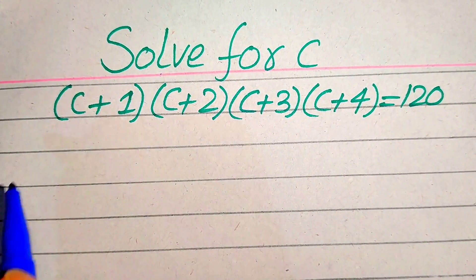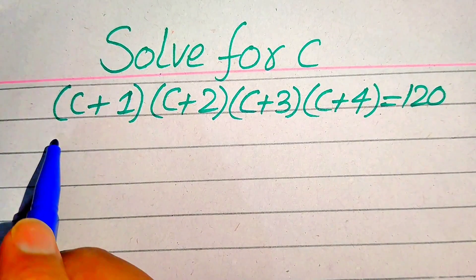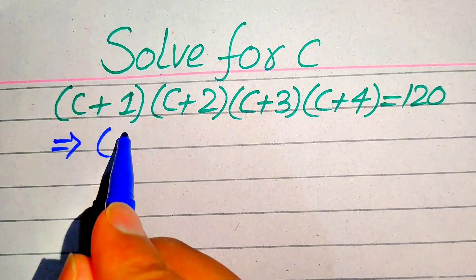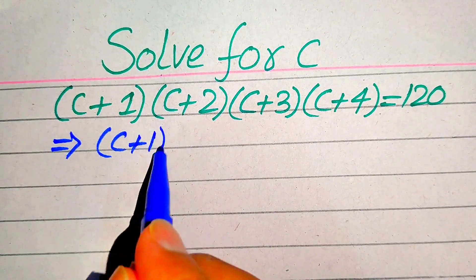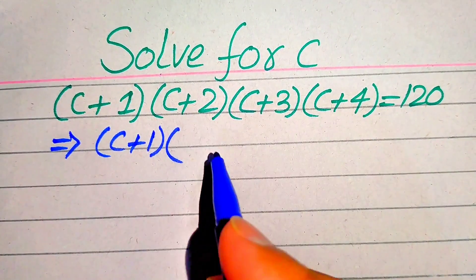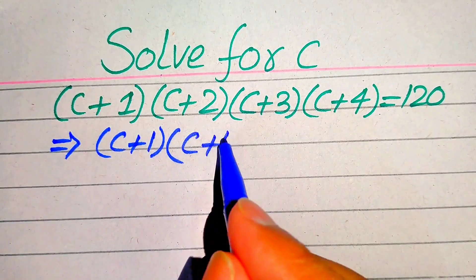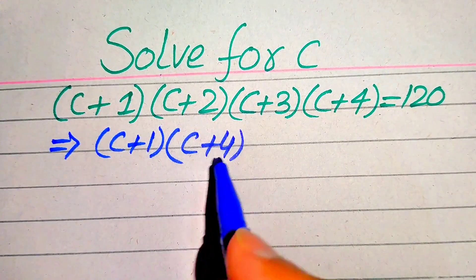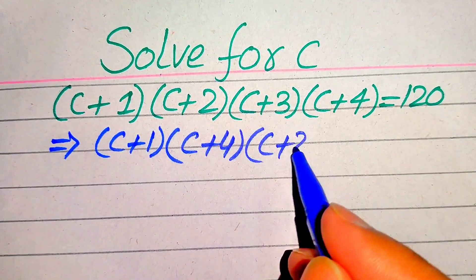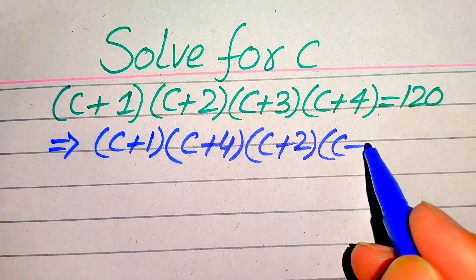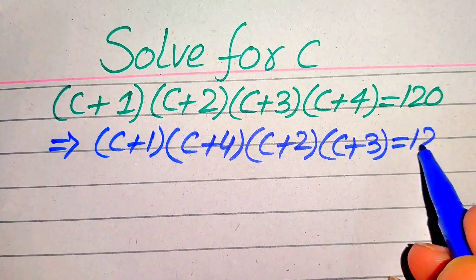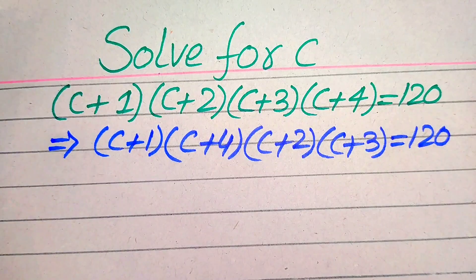First we rearrange all of these factors. We make the pair of (C+1) with (C+4) and (C+2) with (C+3), so it is written as (C+1)(C+4)(C+2)(C+3) = 120.